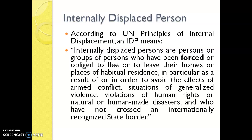The reason could be some armed conflict, situations of violence, violation of human rights, or any natural or man-made disaster. The key difference is they have not crossed the internationally recognized state border — that is, they have migrated from their home place to some other place within the country, so they are still citizens of that particular country. Refugees are not citizens of the country in which they have taken shelter, but IDPs are persons who are still citizens of the same country, having only migrated from one state to another.